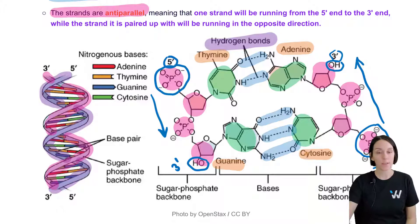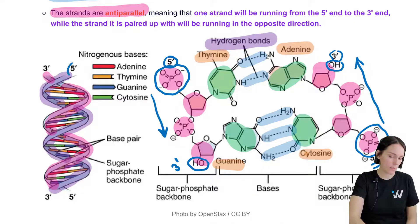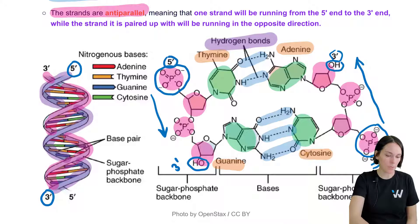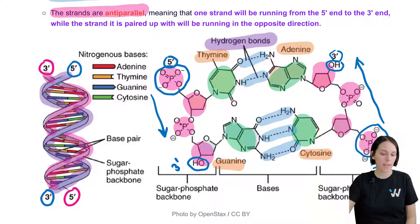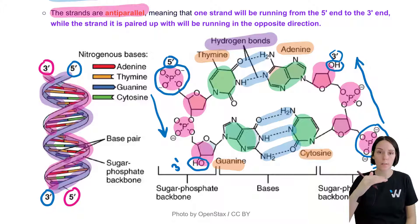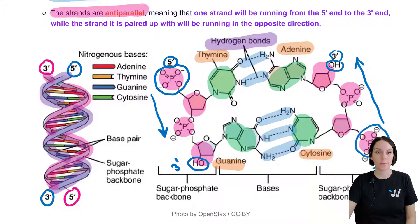You can see that on the diagram at the left as well — one strand runs five prime to three prime, and the strand it is paired to runs in the opposite direction, three prime to five prime. Each of those nitrogenous bases forming the rungs of the ladder is base paired with its partner in a complementary fashion.